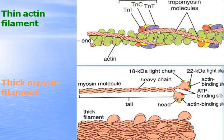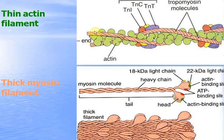Molecular organization of thin actin filaments: they consist of a line of green globules of protein actin. Some of these globules have binding sites for myosin. There are fiber-like tropomyosin molecules — they close the binding sites of actin. There is also a troponin complex consisting of three globular proteins, and it is connected to calcium ions.